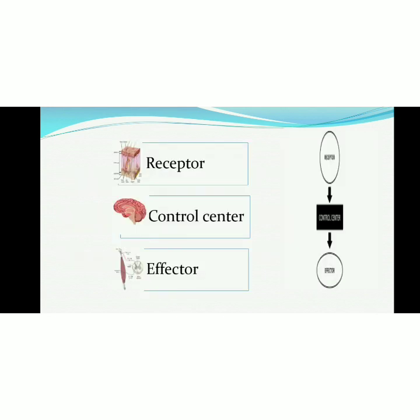There are three components of the control system. The first is the receptor — as the name suggests, it receives the stimulus. The receptor receives the stimulus and sends it as input information to the control center. The control center could be the brain or spinal cord. Different control centers exist at different levels inside the living organism. The control system gives orders to the effector, and the effector shows the response — because of the effector, any organism reacts.